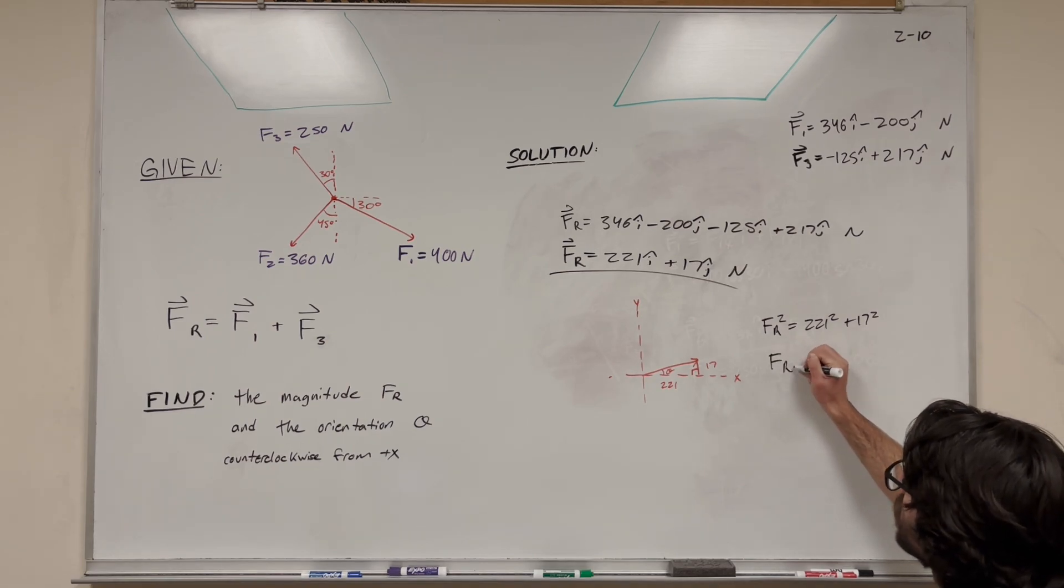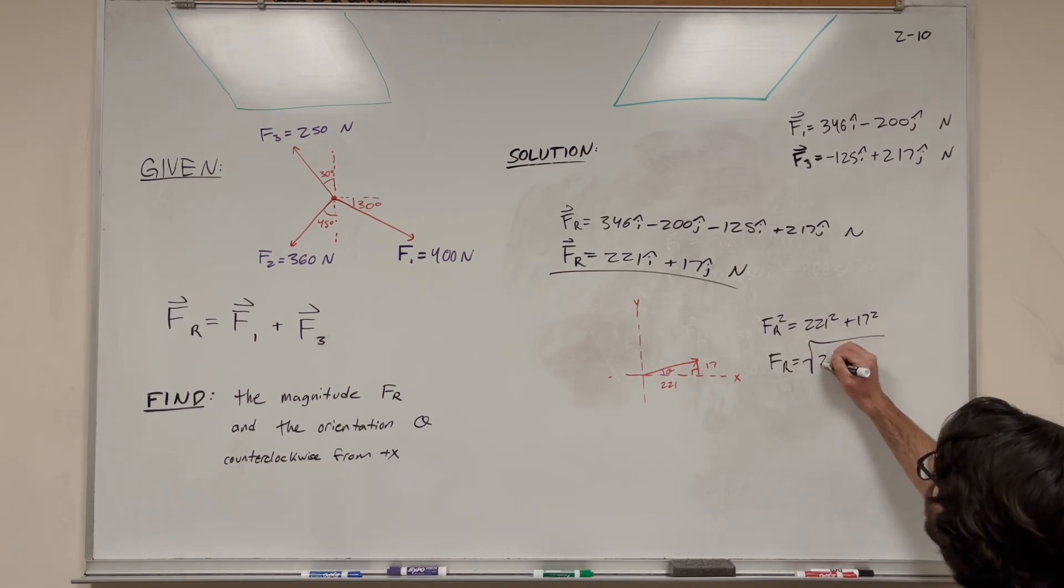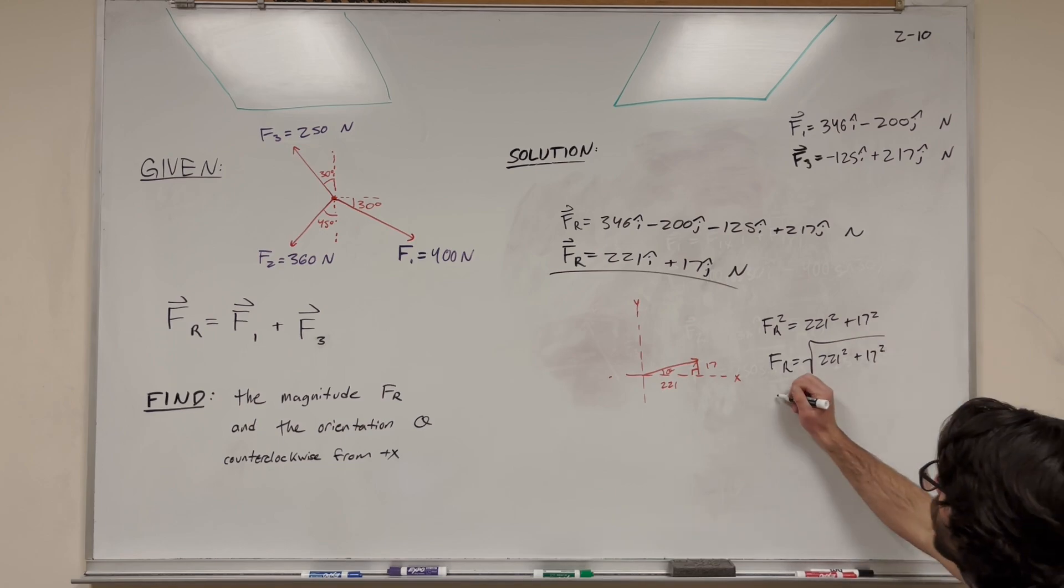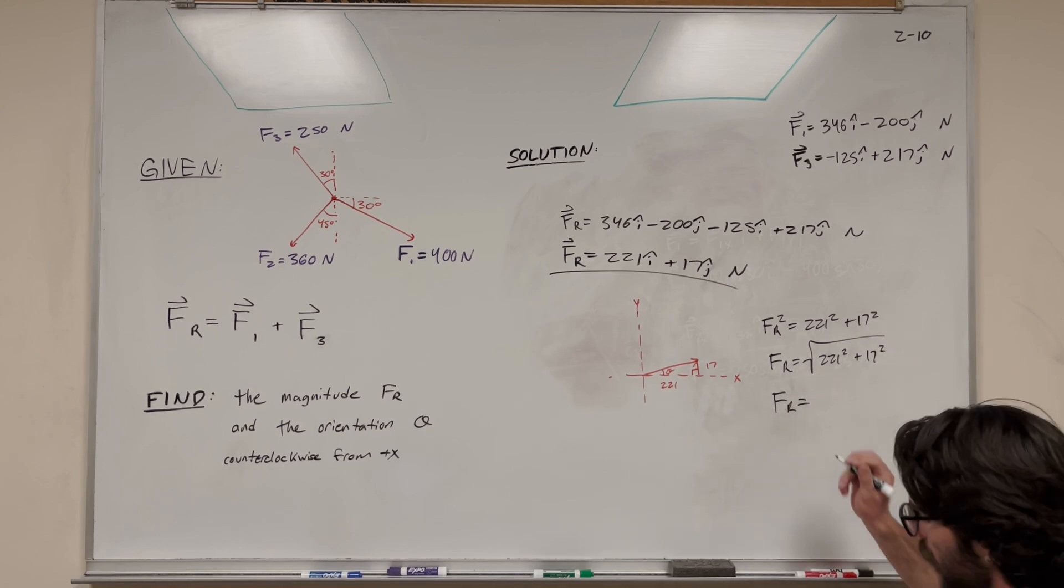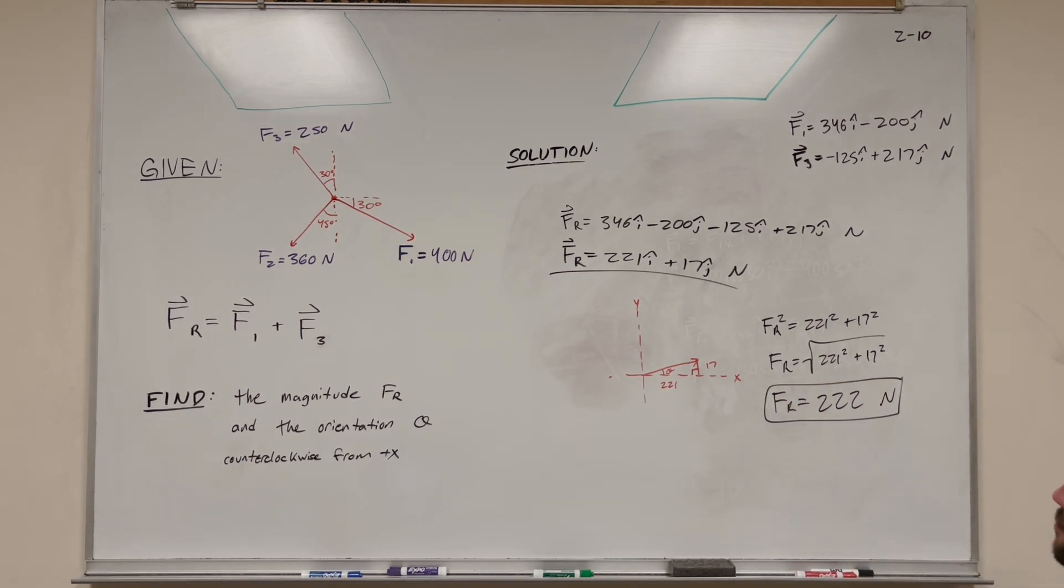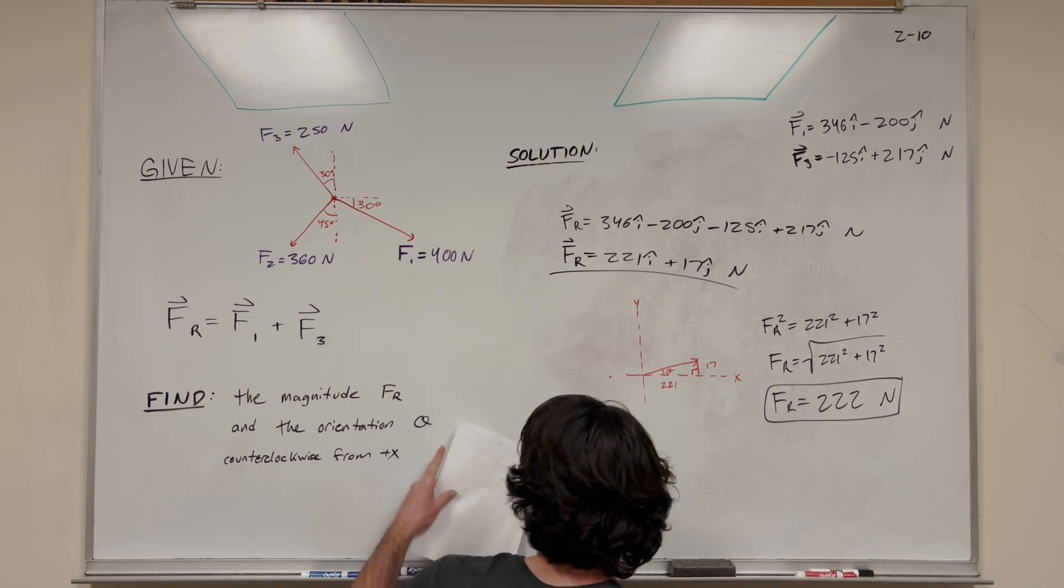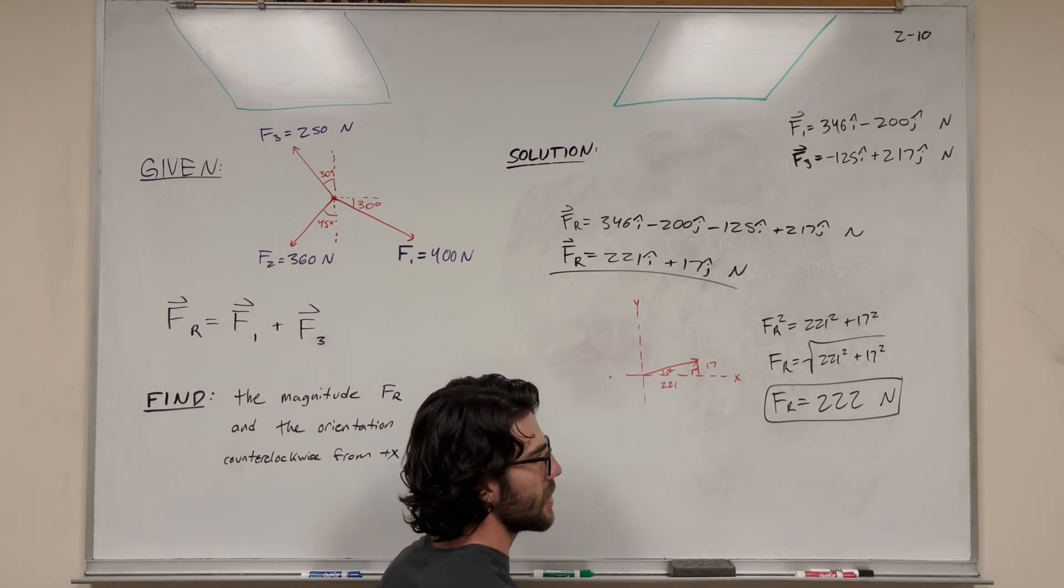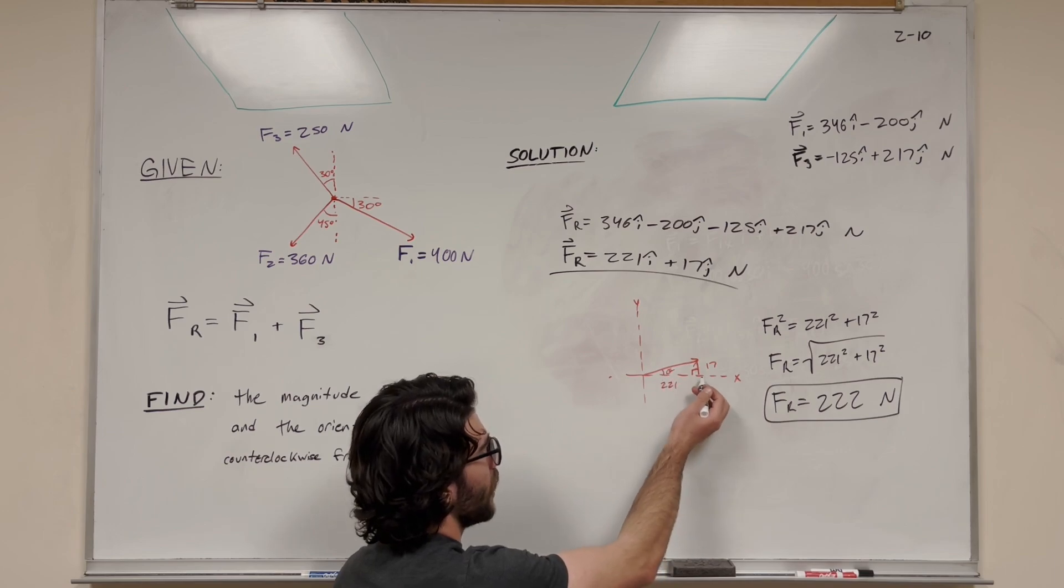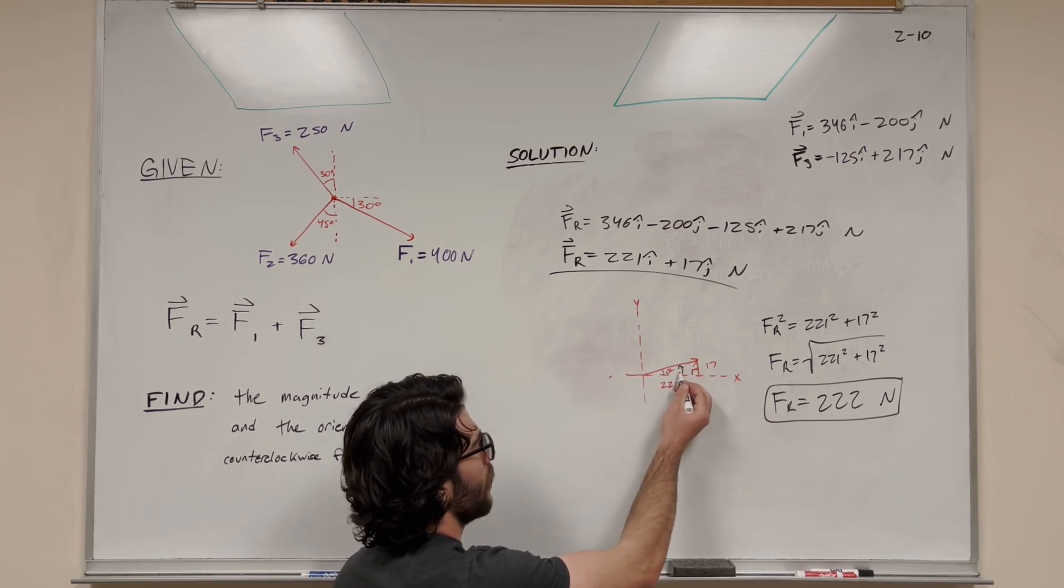FR-squared equals 221-squared plus 17-squared. Take the square root: square root of 221-squared plus 17-squared. Solving this gives 222 newtons. That's your answer for magnitude. Now we need to find the orientation counterclockwise from the positive x-axis.